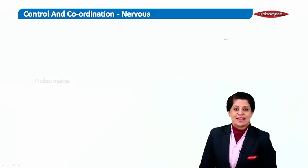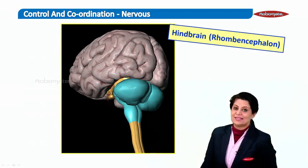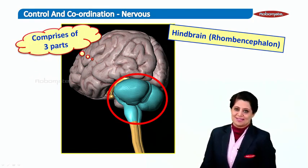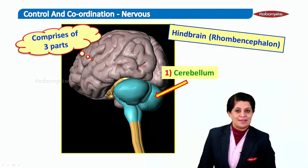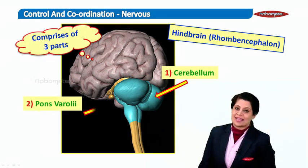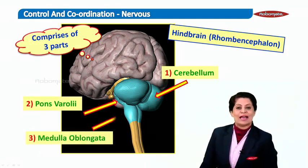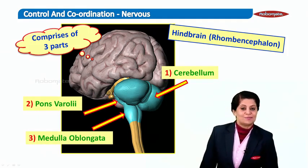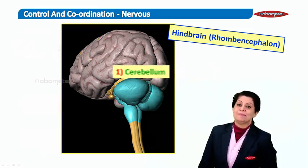Now first, let's see where your hindbrain is. It comprises of three parts. The first part is called the cerebellum. Right ahead is the pons, the second part of the hindbrain. Below the pons is the last part, called the medulla oblongata. In this module, we'll be talking only about the cerebellum.